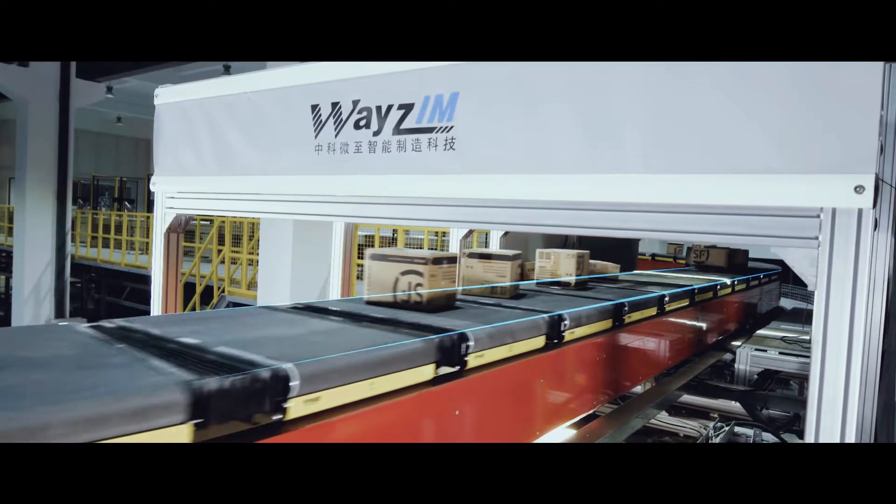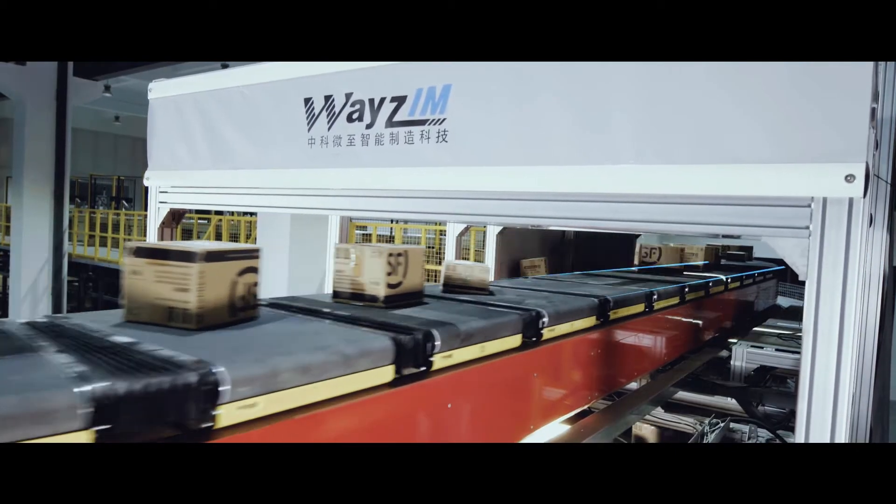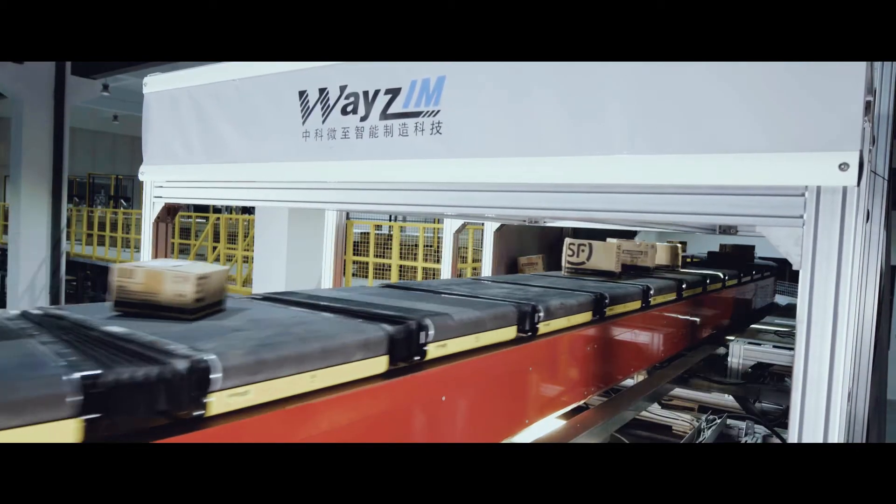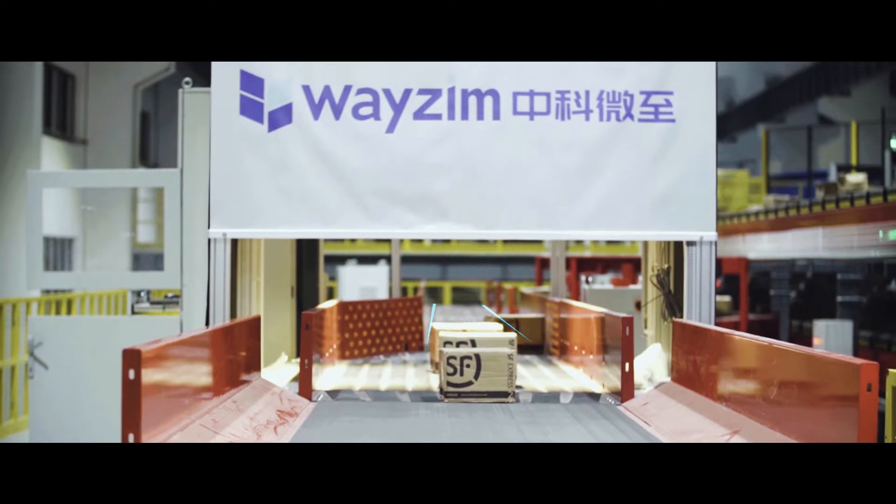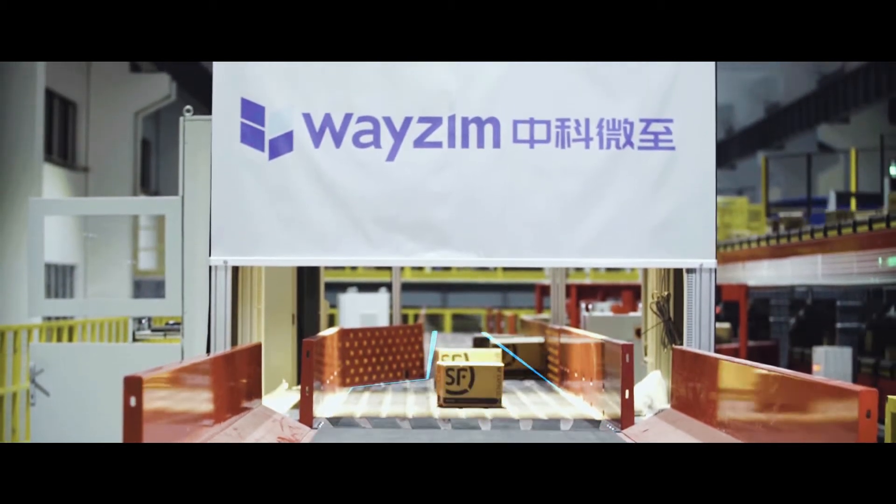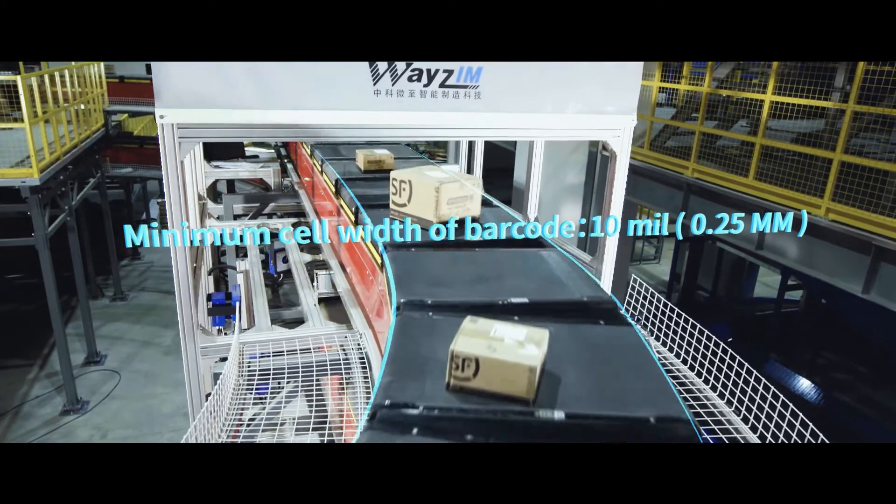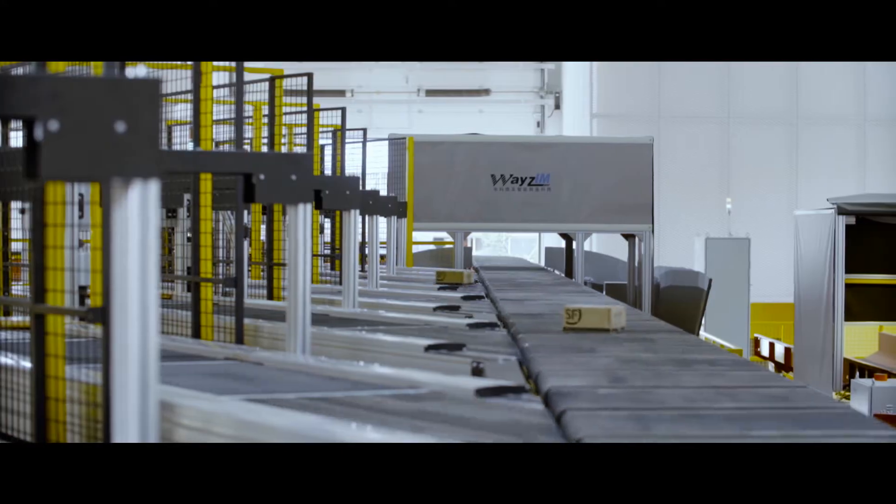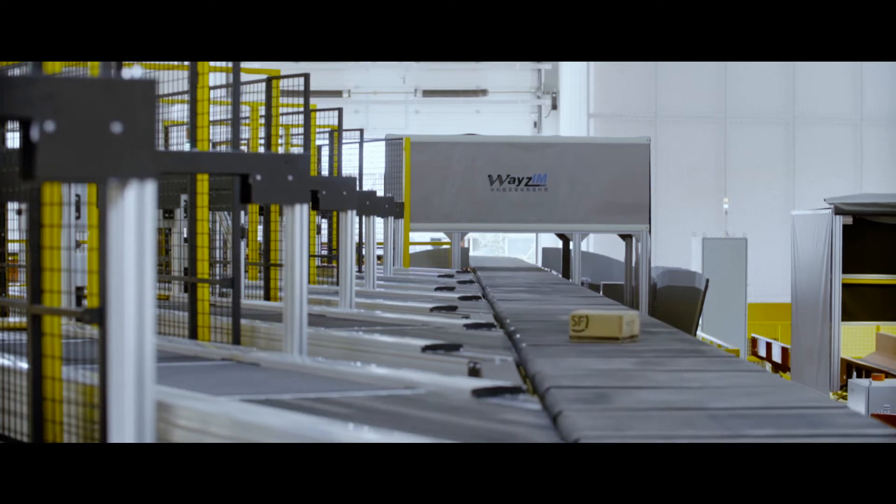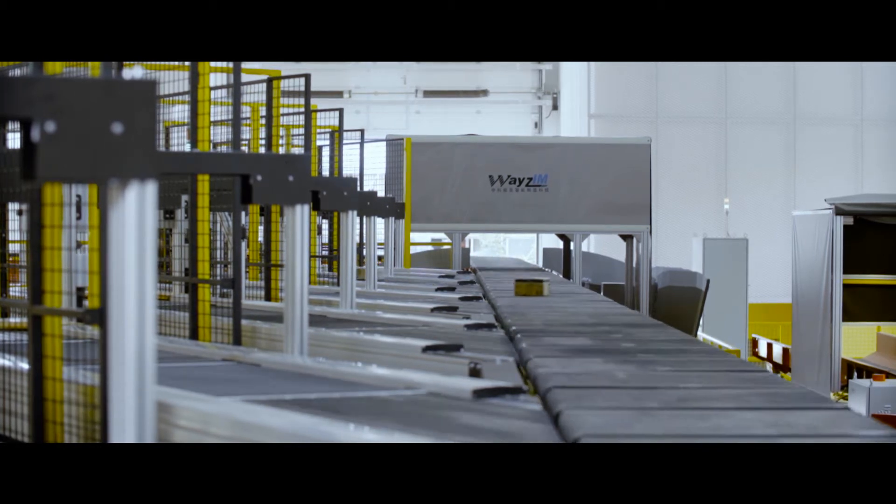The empty carrier detection system is equipped with high-reliable visual sensors combined with image segmentation and target detection algorithms to accurately collect information such as the position, attitude, and size of parcels to achieve rapid detection and sorting and improve sorting accuracy.